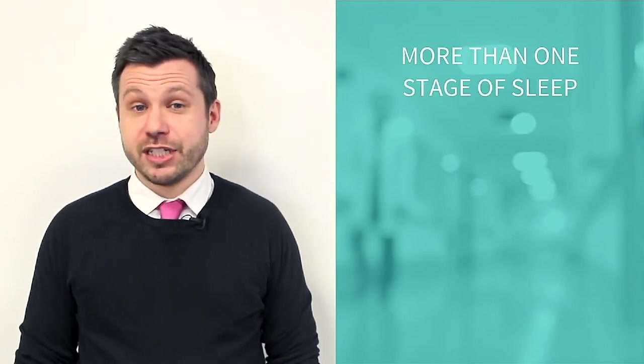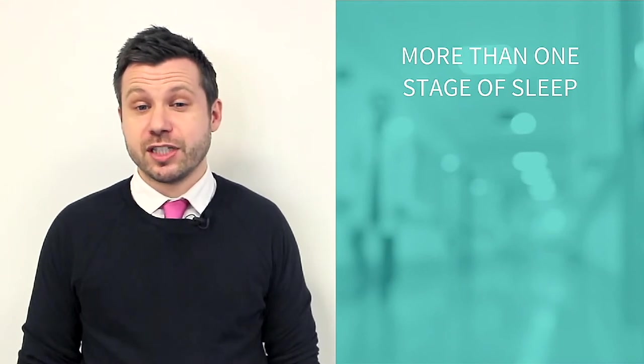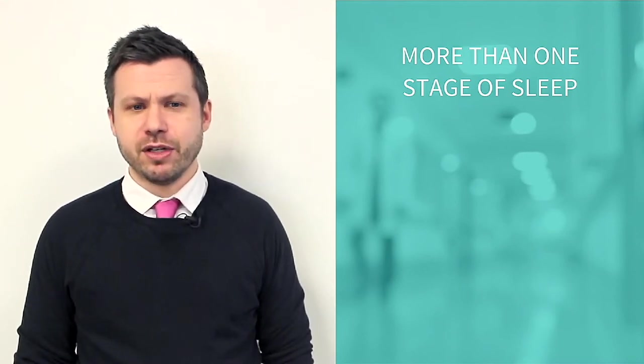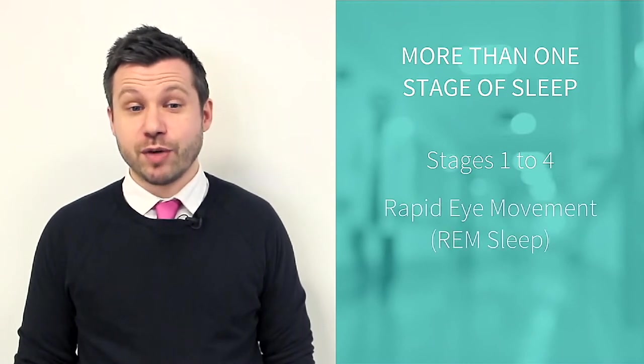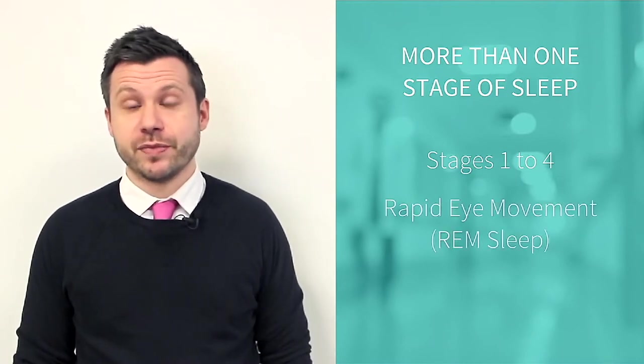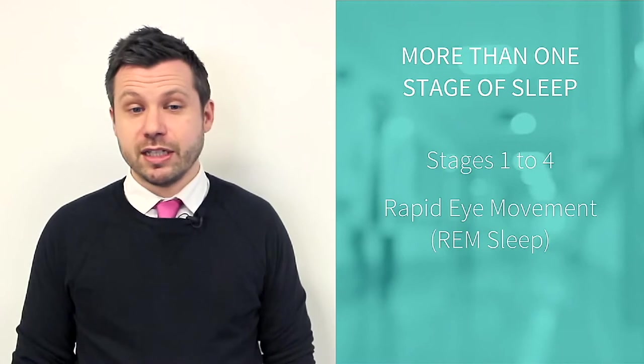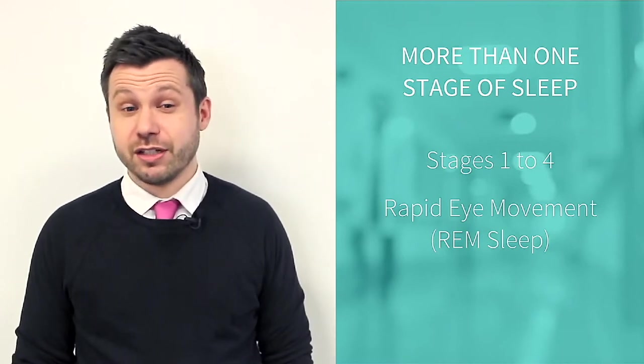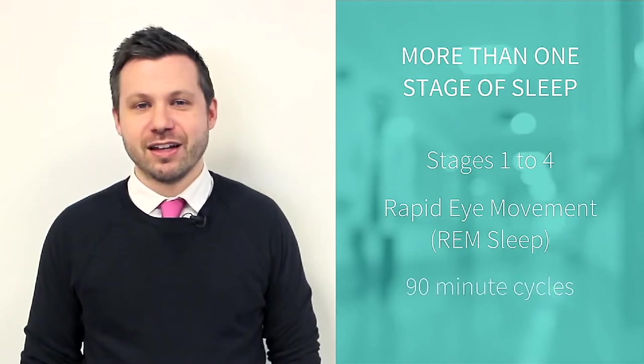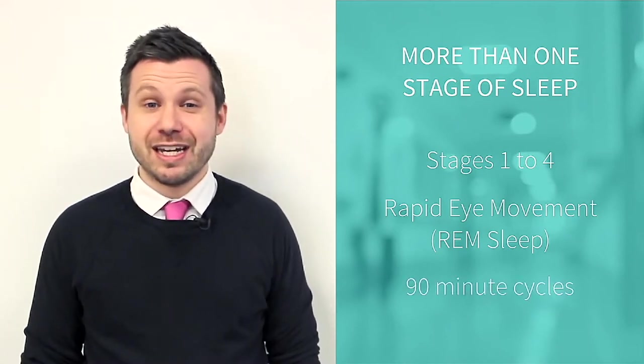Scientists have been trying to understand what happens when we sleep for a long time. However, it has proven a difficult thing to do. What we have learned is that there appears to be more than one stage of sleep. Although early research on sleep identified five stages of sleep, including stages one through four, followed by a stage of sleep called rapid eye movement or REM sleep, scientists now typically lump stages three and four into one category, meaning that there are four stages in total. Either way, we go through these stages in 90-minute cycles.